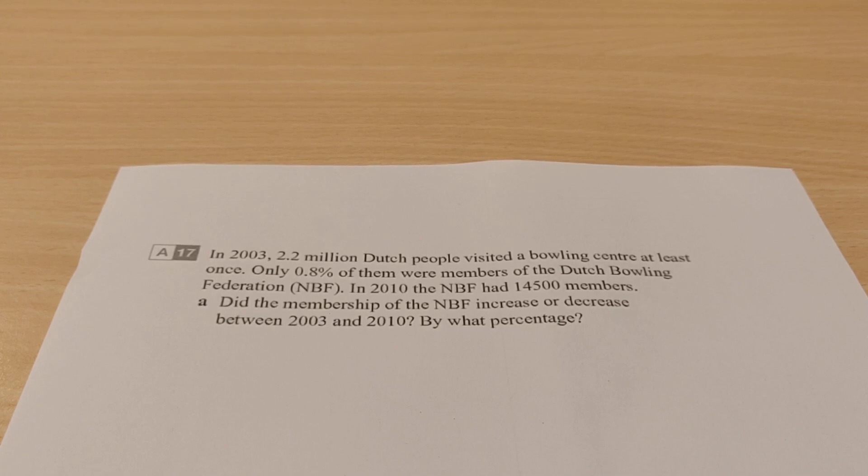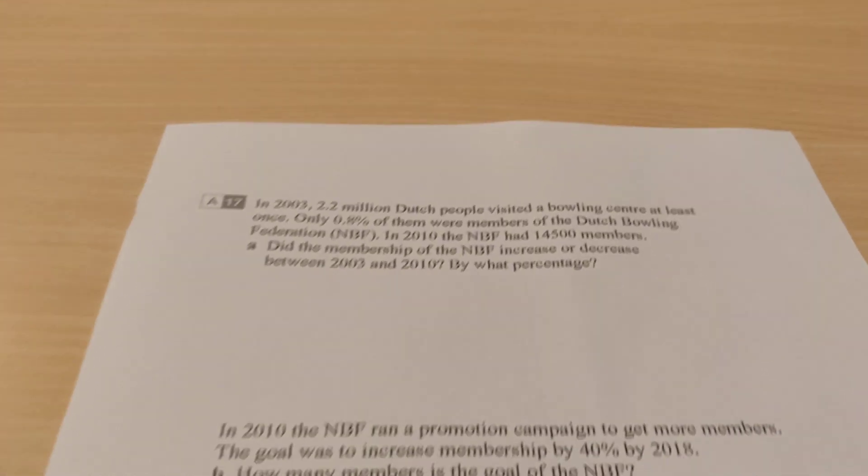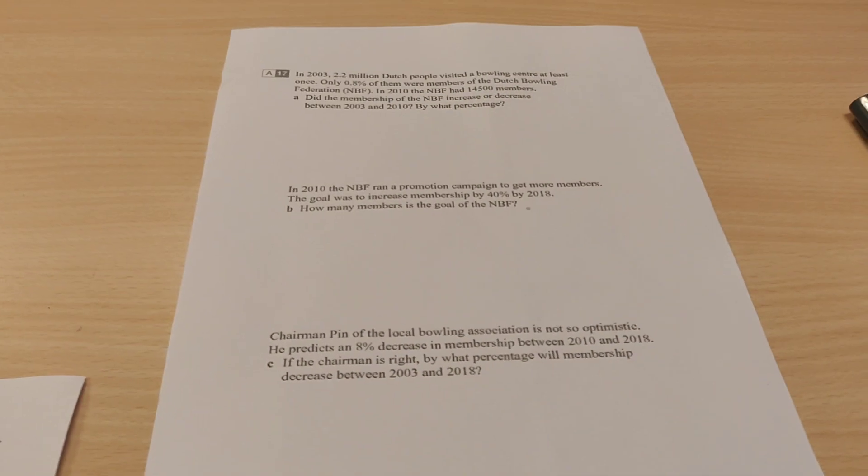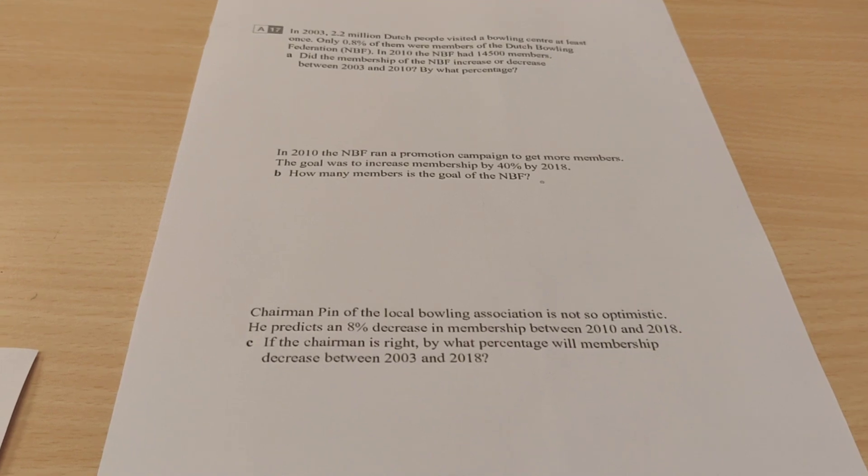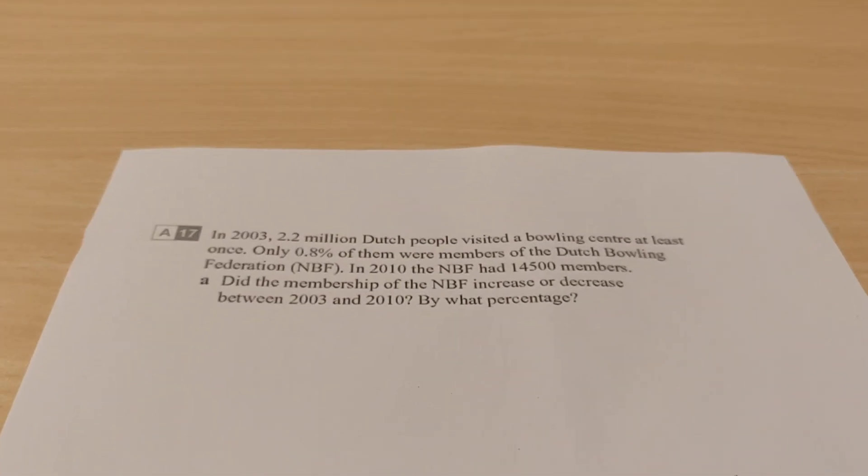Alright, here's another video for 2HD about exercise 17. Exercise 17 is kind of a big exercise. Here's part A, and then here we have B, and here we have C, so all of it together is kind of big. But we'll just do it step by step. First we'll do A.